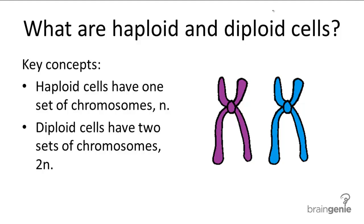The terms haploid and diploid refer to the chromosome count within a cell. A haploid cell will have one set of chromosomes, whereas a diploid cell will have two sets of chromosomes, commonly denoted as N for haploid and 2N for diploid.